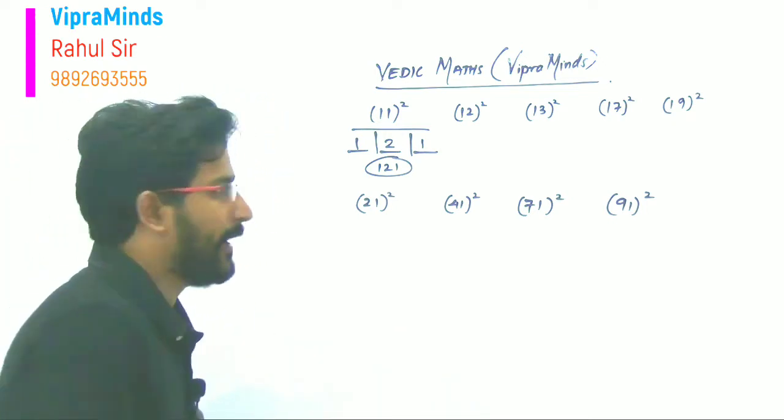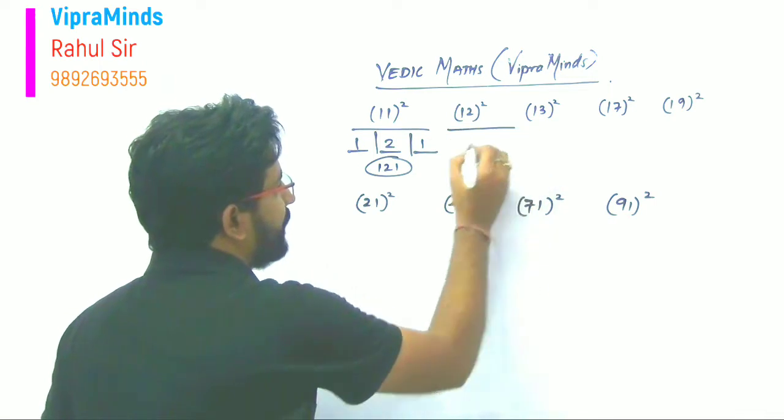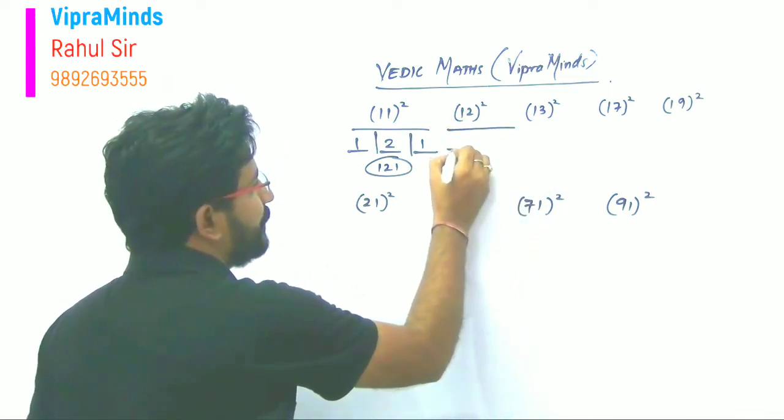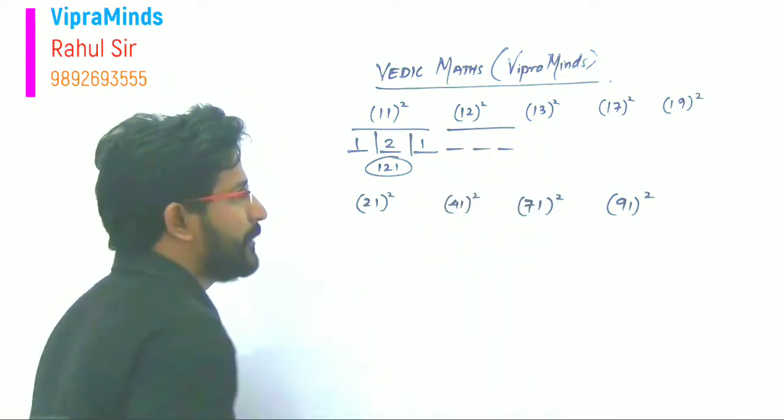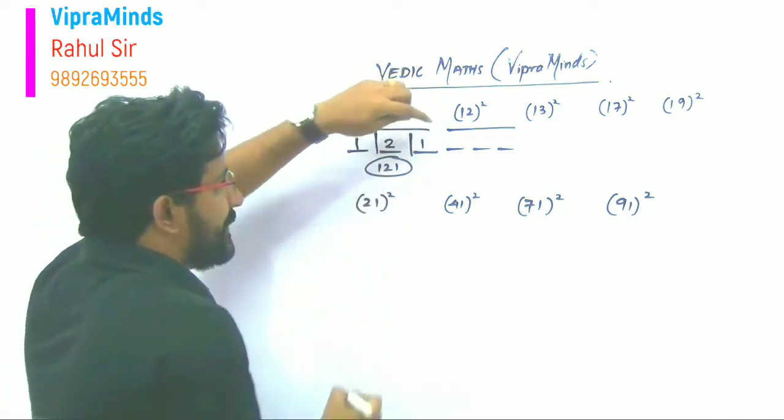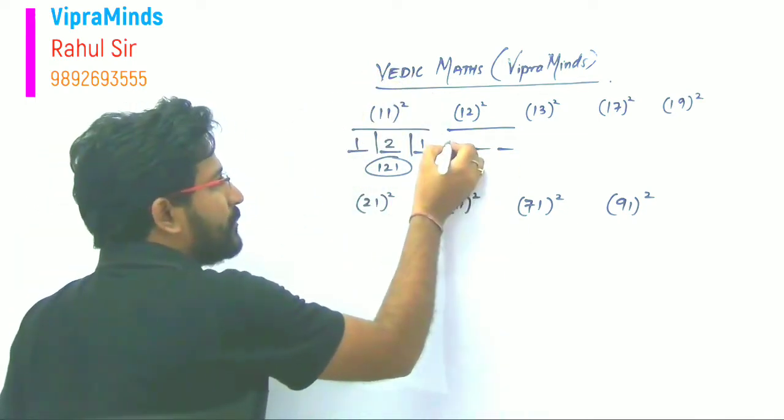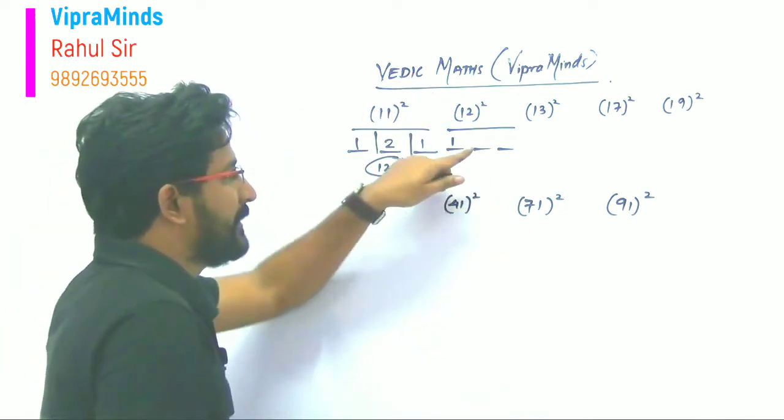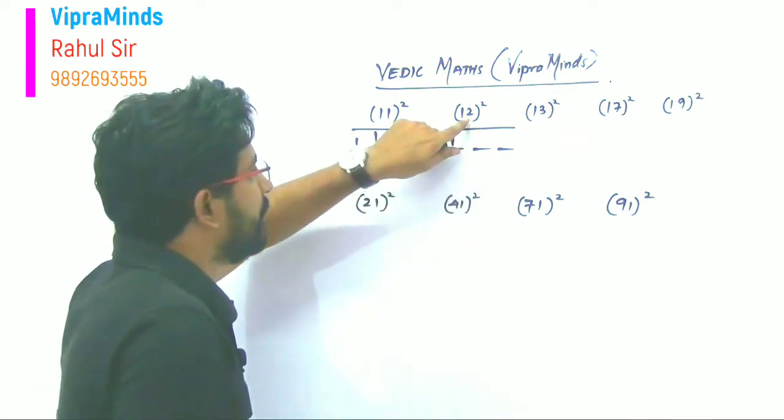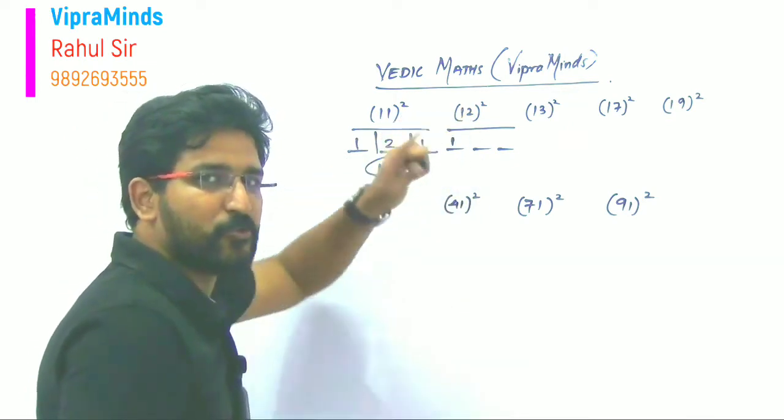Now the next one is 12. Again same process we will follow. So first block is the tens place square, that is one. So one square is one. Second block is the unit place two times add.